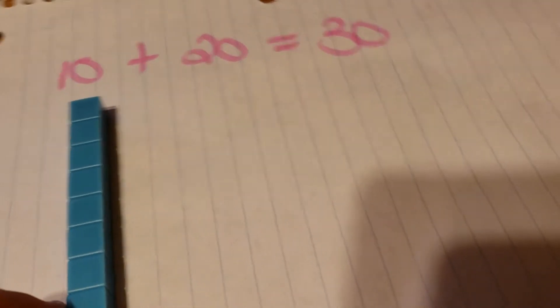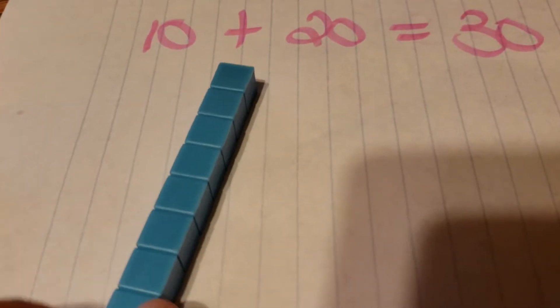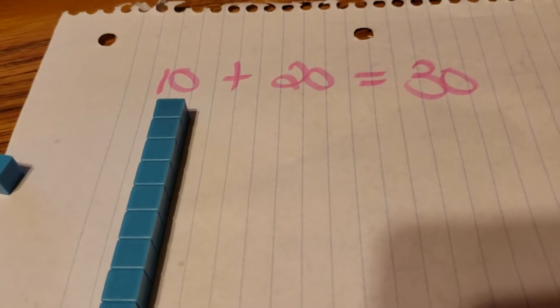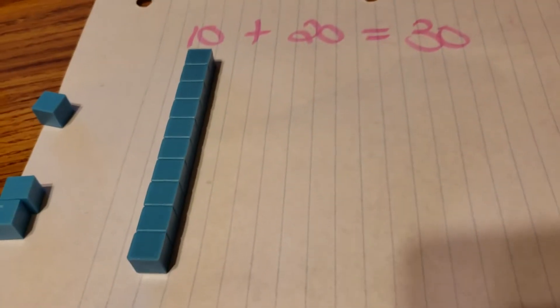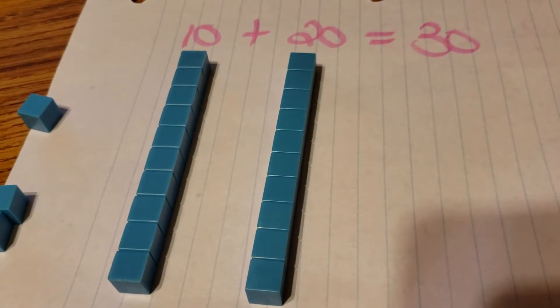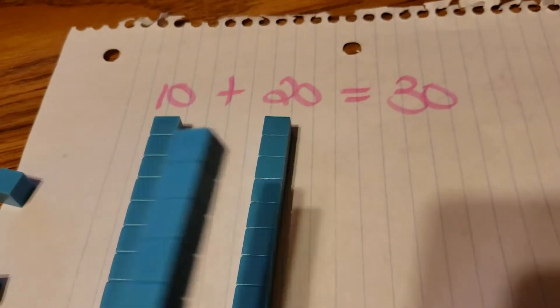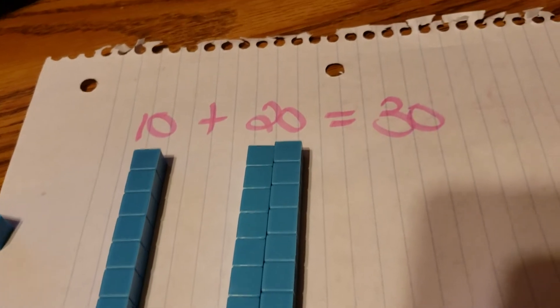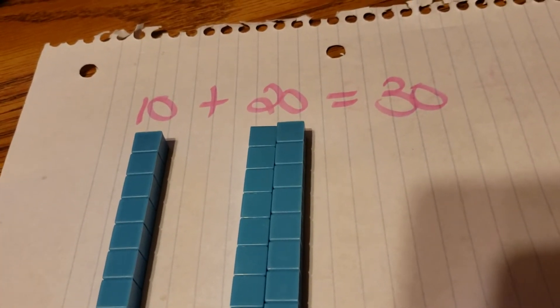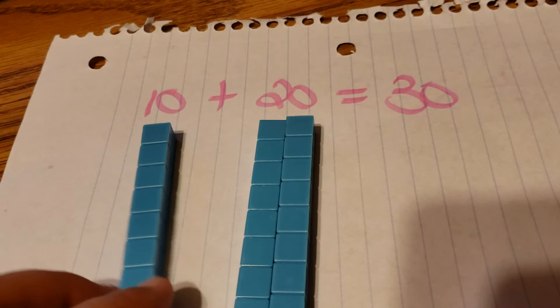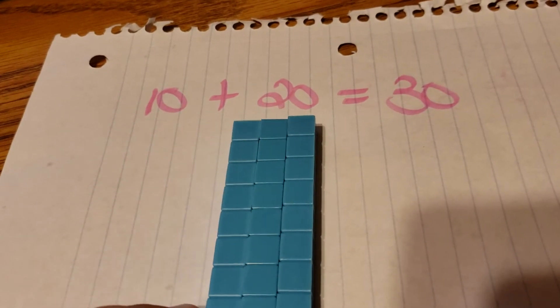Okay, so we have 10 there. And then you have one 10 plus another 10 is 20. And if you combine 10 plus 20, you get 30.